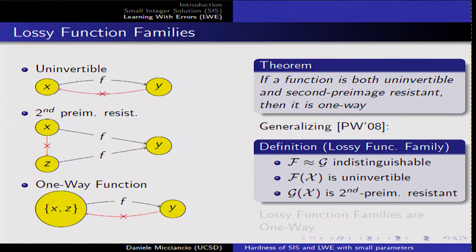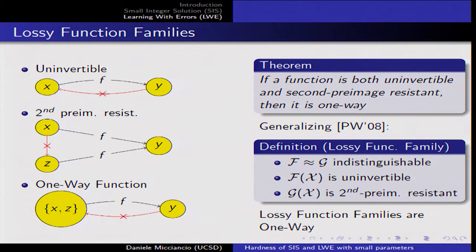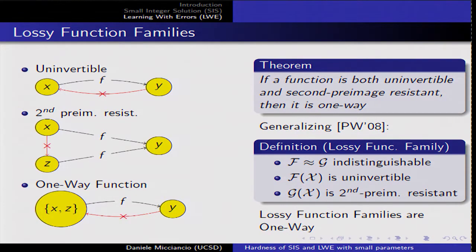These notions give rise to something called the lossy function family, a cryptographic primitive originally proposed by Peikert and Waters in the context of lossy trapdoor functions. Here we don't need trapdoors, so this definition applies to arbitrary functions. The definition requires two indistinguishable families of functions: one uninvertible, the other second-preimage resistant. Given these properties, it easily follows that the function is necessarily one-way.